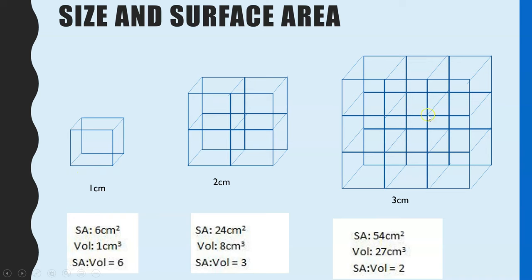And what we can see from this is a key pattern. The larger the object, in this case, cube, the smaller the surface area to volume ratio. And that is of key importance in biology.